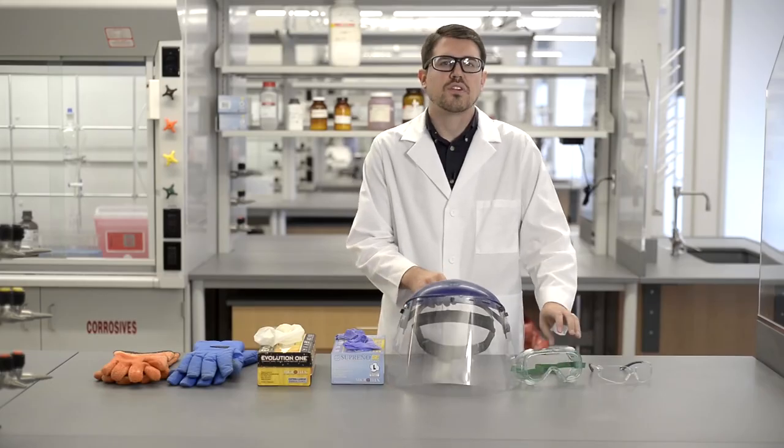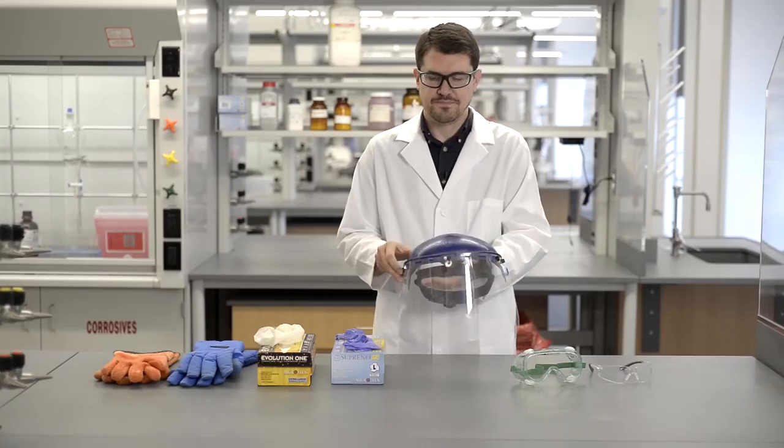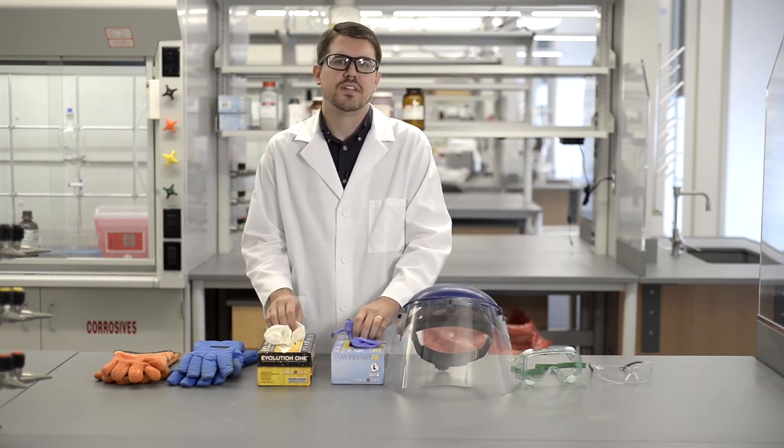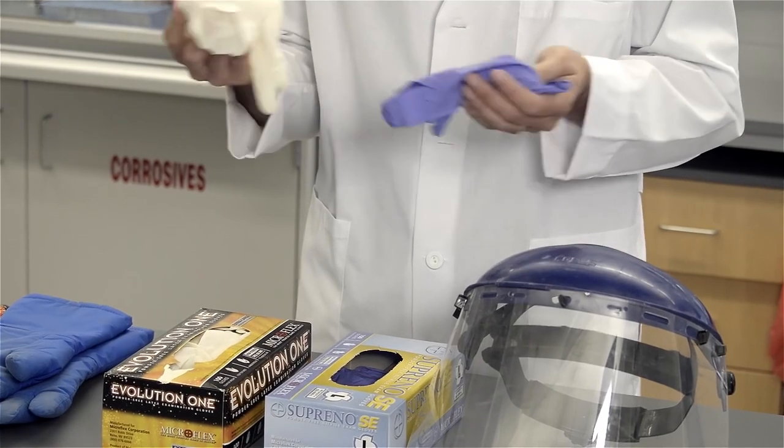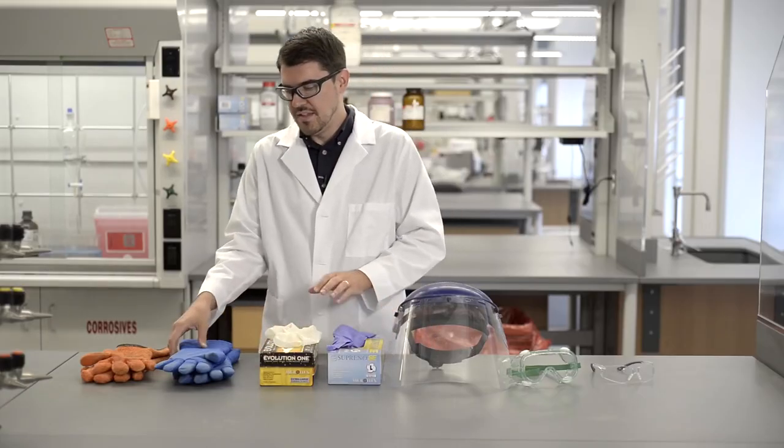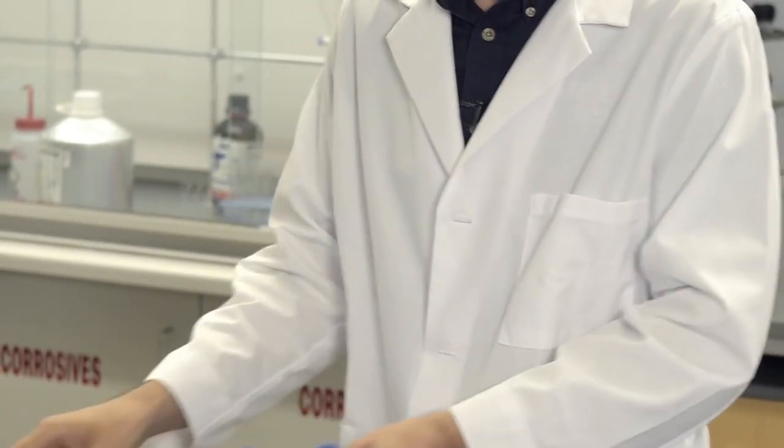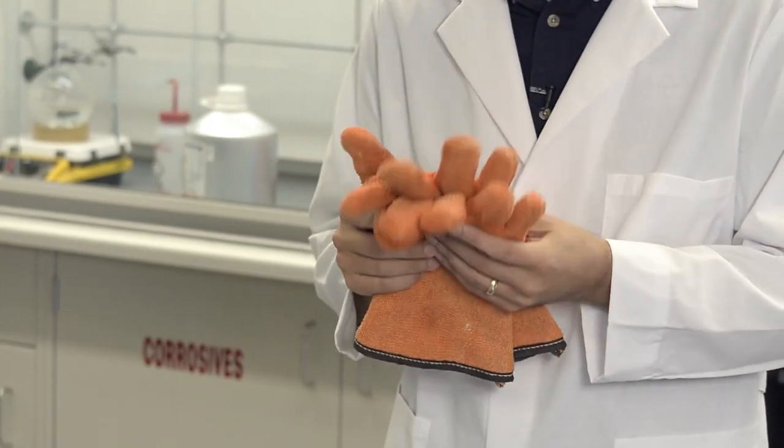If you're working with cryogens or any hazardous processes, then a face shield is required. Gloves also need to be worn at all times. They are made of many different materials. Please consult your MSDS to determine the appropriate type. Cryogen gloves are to be used when working with any type of cryogen, and autoclave gloves are to be used when working with an autoclave or any hot materials.